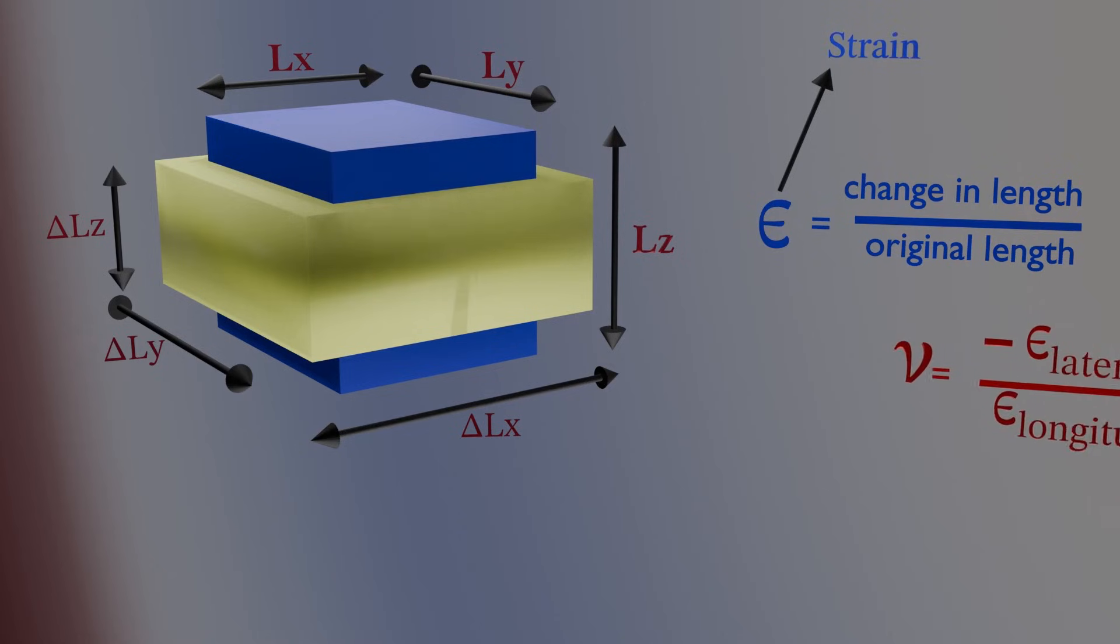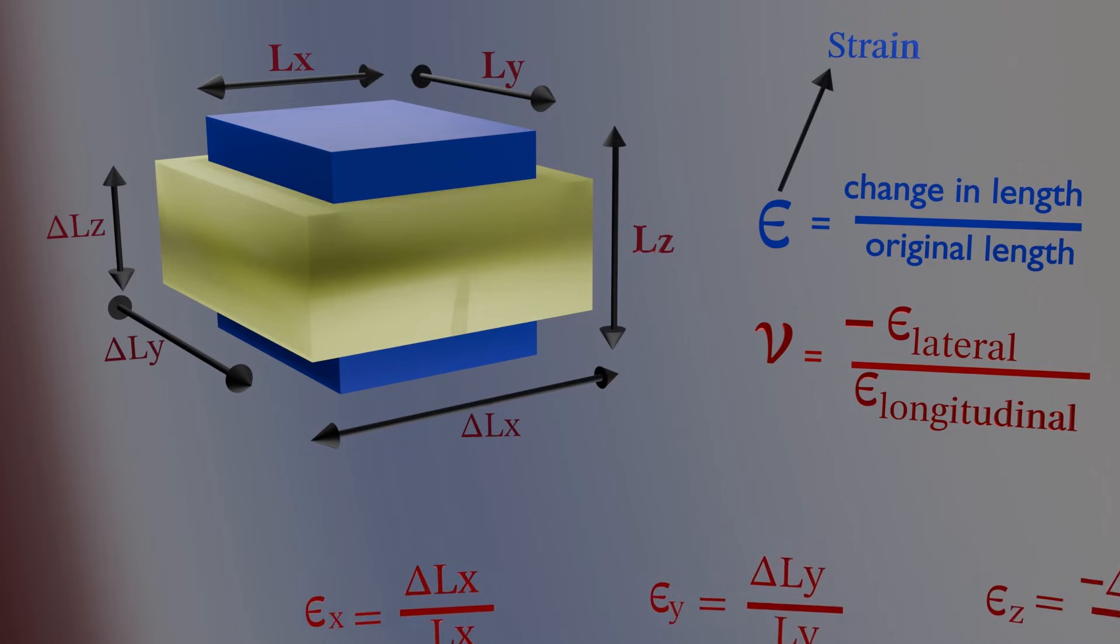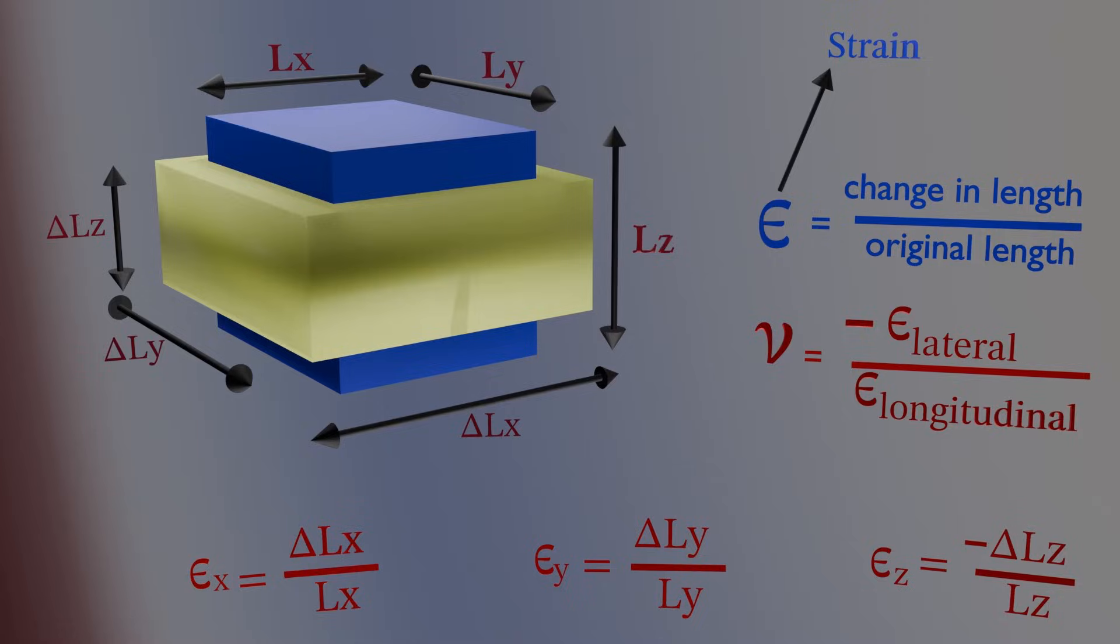The Poisson's ratio can be defined as the ratio of the strain in the lateral direction to the strain in the longitudinal direction. Strain in each direction can be calculated using their respective equations.